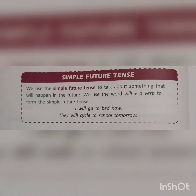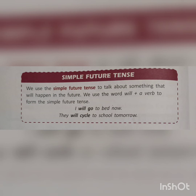Next, what is simple future tense? We use the simple future tense to talk about something that will happen in the future — it has not happened right now, but it is going to happen. We use the word 'will' plus a verb to form the simple future tense. We can also use 'shall.' For example: I will go to bed now. They will cycle to school tomorrow — they have not cycled today, but tomorrow they will go and cycle. That is simple future tense.